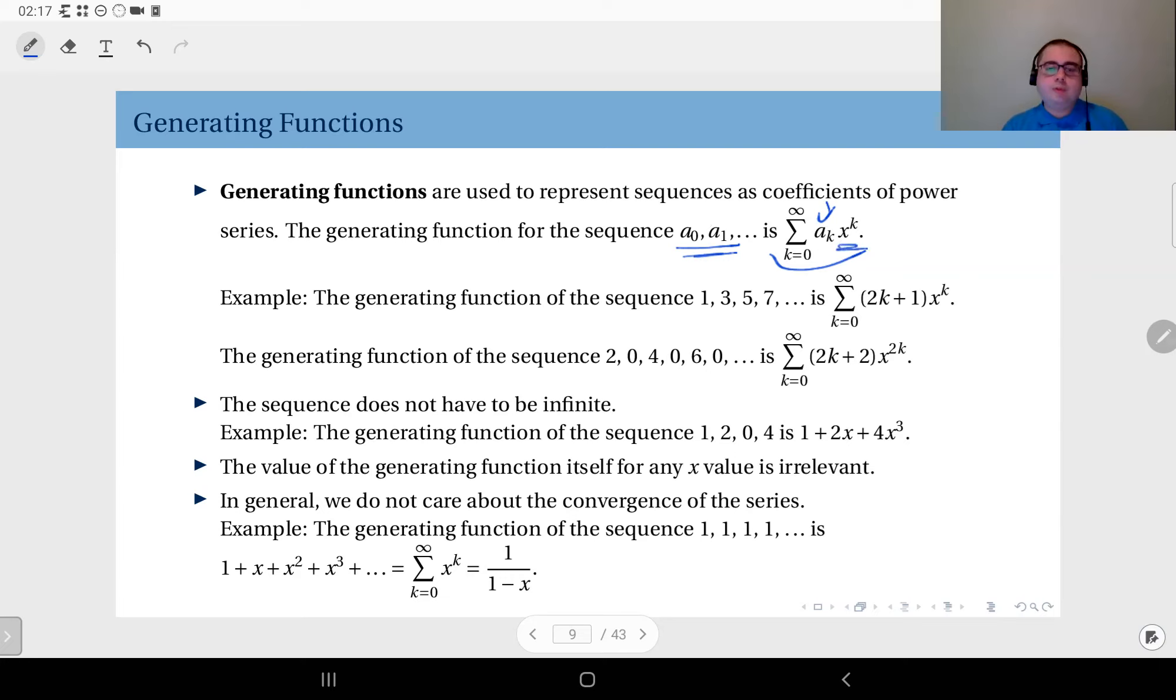So what you do is you multiply a sub k, any of those numbers, by x to the power k. So let's say 8 is your 10th number in your sequence, you multiply that with x to the power 10. You do this for all the numbers in your sequence, add them up, and you get a function in x. That function is called the generating function of the sequence.